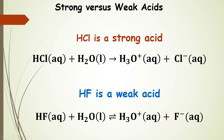Looking at the equations: hydrochloric acid dissolved in water is going to dissociate completely — notice this single-headed arrow — giving us hydronium or H+ and chloride anion. That's a strong acid with the single-headed arrow. Now hydrofluoric acid is a weak acid, so we write out a similar equation but notice that we have a double-headed equilibrium arrow, showing that hydrogen fluoride only partially dissociates into ions. A single-headed arrow gives full dissociation, and the double-headed arrow gives partial dissociation.